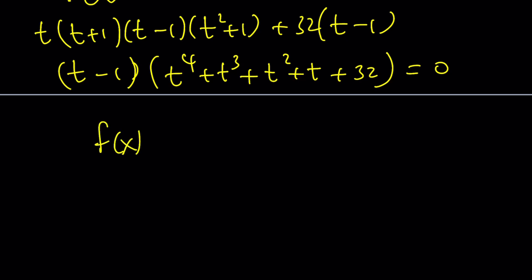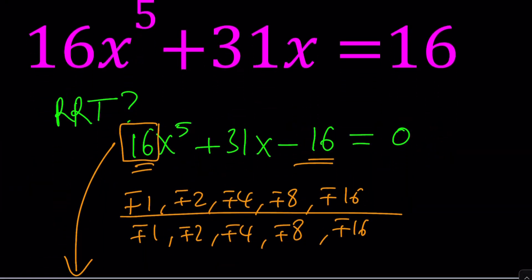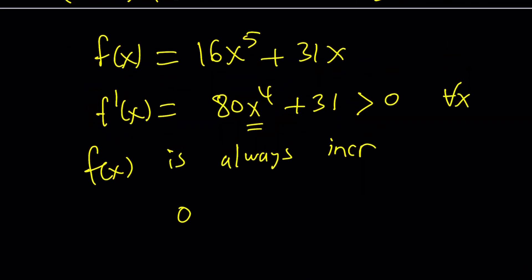So, set F of X equal to 16X to the 5th plus 31X. Remember, this is the left-hand side. And then, differentiate F. This is going to give you 80X to the 4th plus 31. Notice that this is non-negative, and this sum is going to be greater than 0 for all X values. And this means F of X is always increasing. Since our function is always increasing, it's going to intersect a constant at a single point. That means there's one real solution.